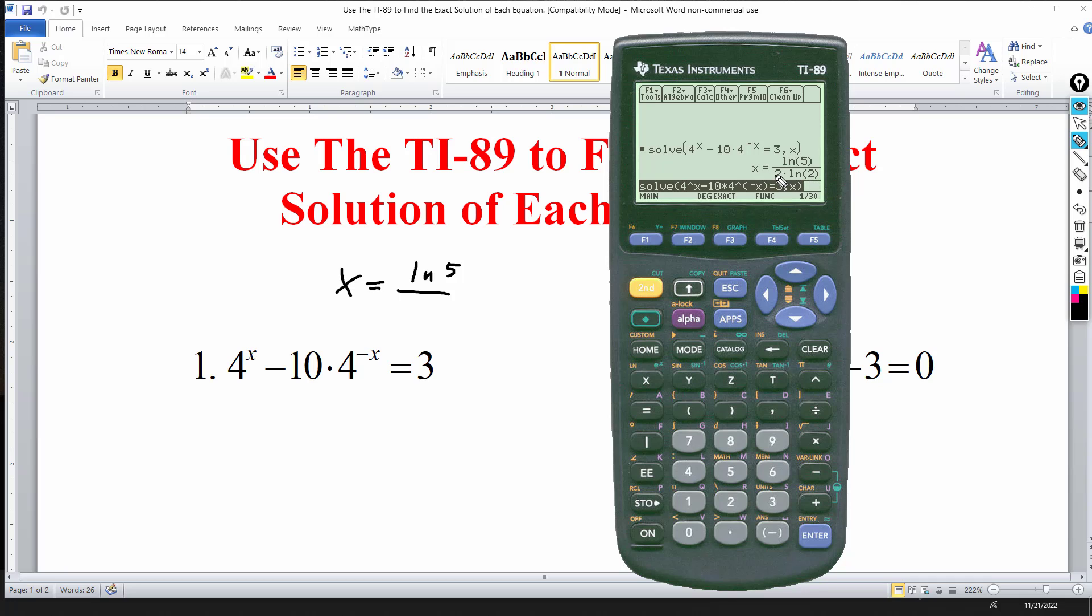And you can also write this because you can get different answers depending on how you write this. This 2 can become a, this coefficient of 2 can become an exponent. And that's the same thing, that would be the same thing as the natural log of 2 to the second which is 4. So this would be your exact solution.